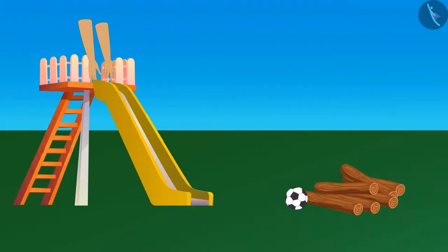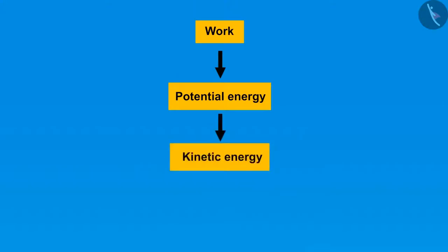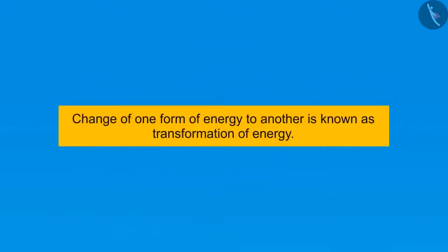Let's understand the whole sheet again. Firstly, the work is converted into potential energy. Secondly, potential energy is then converted into kinetic energy. Thirdly, kinetic energy is converted into some work again. This rule is followed by everyone and everything in this world.